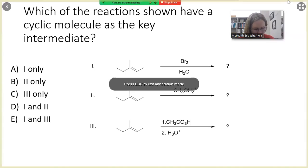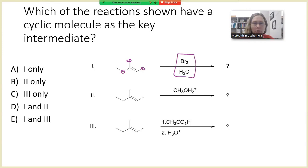So let's go one by one. First off, we have a tri-substituted alkene, and it's reacting with Br2 and water. So this is the halohydrin reaction, and we know that in the halohydrin reaction, our key intermediate is going to be a cyclic intermediate.